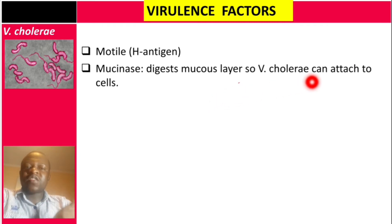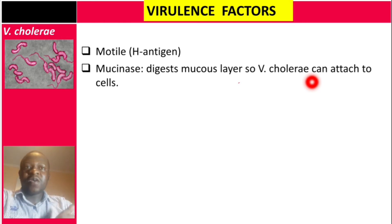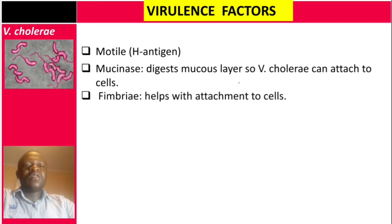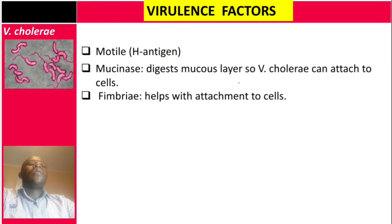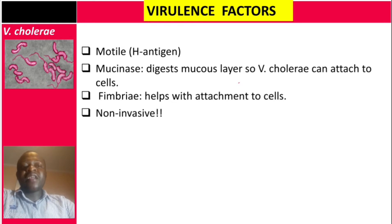It attaches to the epithelial cells but does not enter — it is non-invasive. Another virulence factor is fimbriae, which help with attachment of the bacteria to the cells. So the virulence factors are: H antigen, mucinase, and fimbriae. It is non-invasive — this is very important.